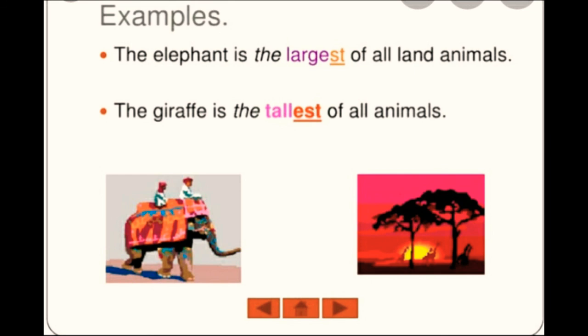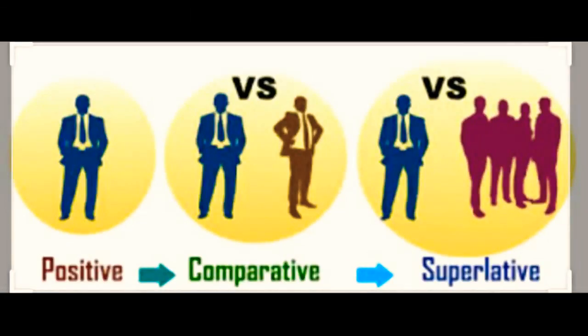When we compare two things, it is comparative — we use -er and 'than'. When we compare more than two things, we use superlative — we use 'the' and -est. For example: the largest, the tallest. In positive, we normally say something about someone. In comparative, we compare two things or two people. In superlative, we compare more than two things.